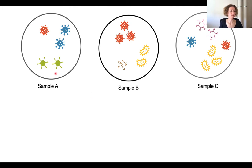First we can have a look at what species are present. So we can say in sample A we have green ones, we have blue ones, we have red ones. Sample B we also have red ones but also yellow and brown.